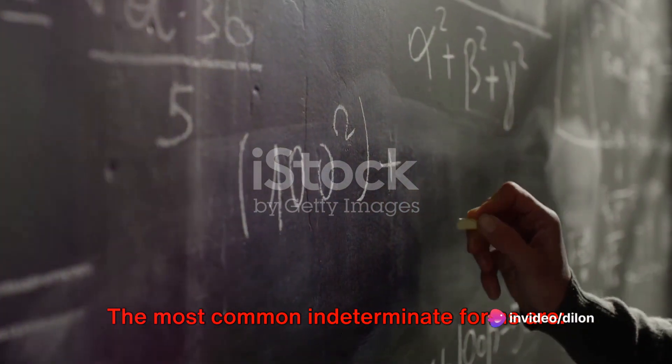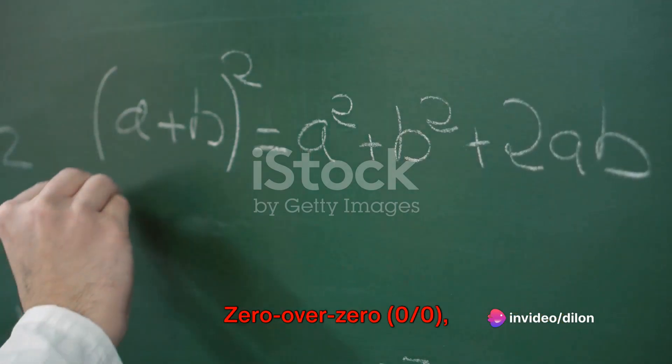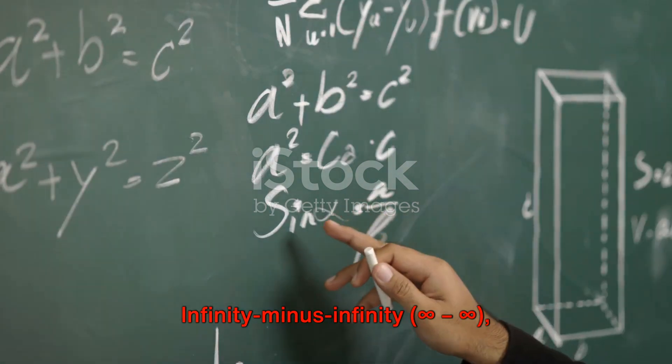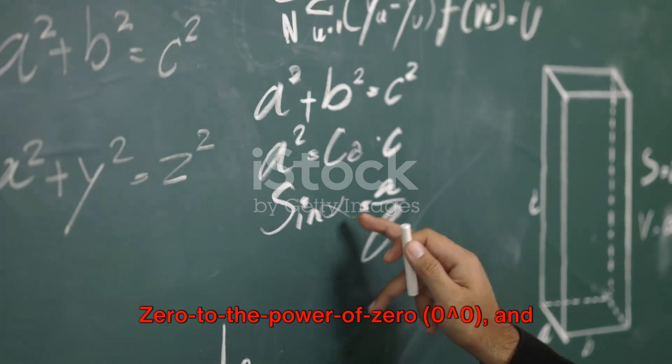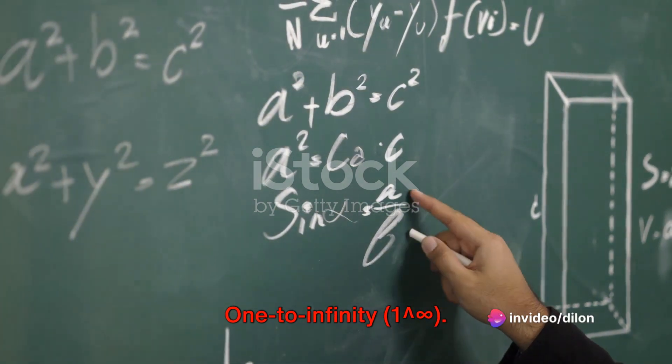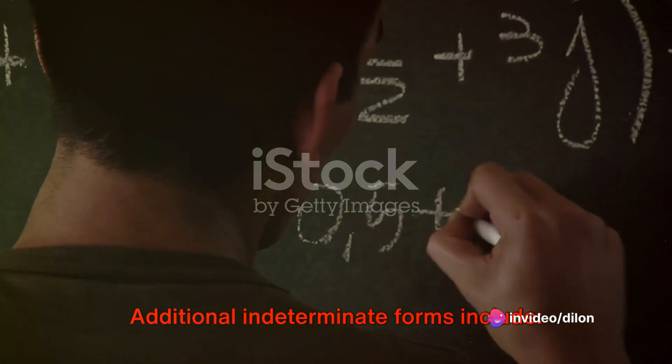The most common indeterminate forms are zero over zero, infinity over infinity, infinity minus infinity, zero to the power of zero, and one to infinity. Additional indeterminate forms include infinity to the power of zero and zero times infinity.